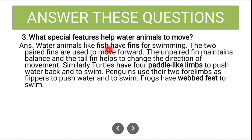Third long answer: What special features help water animals to move? Fish have fins for swimming — the two paired fins are used to move forward, the unpaired fin maintains balance, and the tail fin helps to change direction. Turtles have four paddle-like limbs to push water back and swim. Penguins use their forelimbs as flippers to push water and swim. Frogs have webbed feet to swim. Every water animal has modifications to move forward in water.